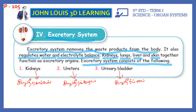The main components are kidneys, ureters, and urinary bladder. These are the three things involved in the excretory system.